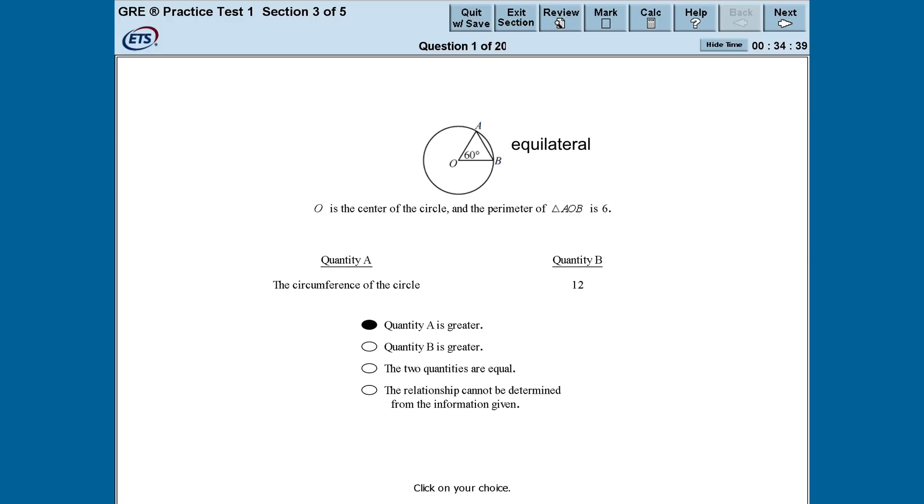Okay, what can we do with that? If AOB is an equilateral triangle, then all three sides are the same length. If the perimeter of the triangle is 6, then each side must have a length of 2. We already determined that AO and BO are radii of the circle, so the radius of the circle must be 2. What can we do with that? Well, a lot of things. With the radius of a circle, we can find diameter, circumference, area, etc. Now, at this point, we've probably seen that quantity A deals with the circumference of the circle, so we know that's what we should solve for, and then compare to 12. And that's it!